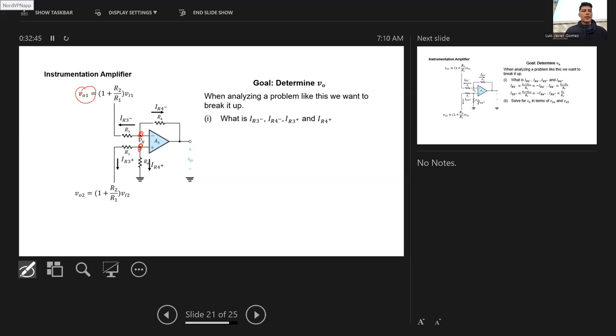Here we're calling this VX. What's this current IR3 in terms of VX and VO1? VX minus VO1 over R3 plus VX minus VO over R4 equals zero. So that's one equation. Another equation we have here is, how can we determine VX in terms of VO2 using this branch?